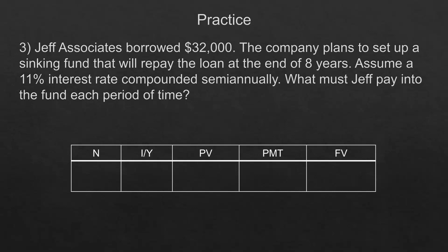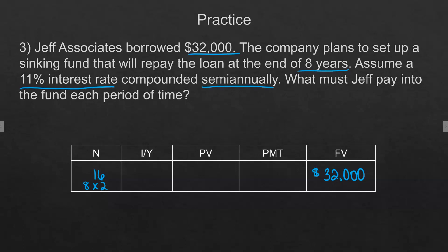Jeff Associates borrowed $32,000. The company plans to set up a sinking fund that will repay the loan at the end of eight years. Assume an 11% interest rate compounded semi-annually. What must Jeff pay into the fund each period? The future value is known, and if entering on Connect you would put the payment in as a positive. That gives us 16 periods, a future value of $32,000, and 11% divided by 2 equals 5.5% per period.